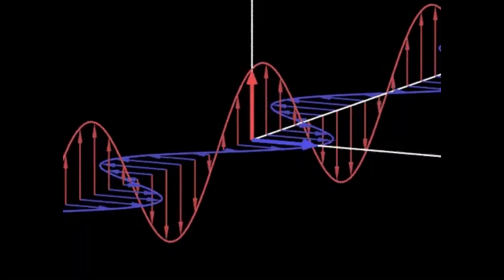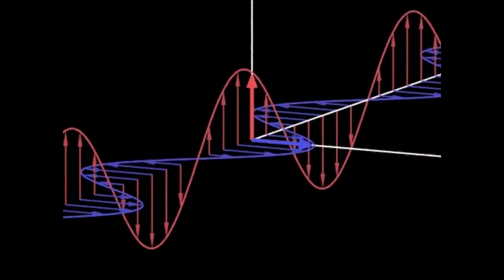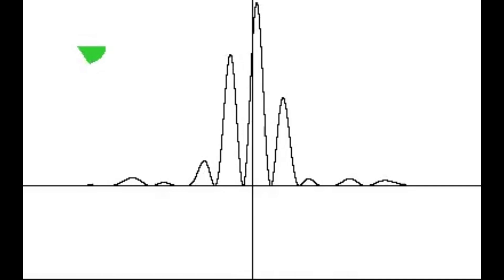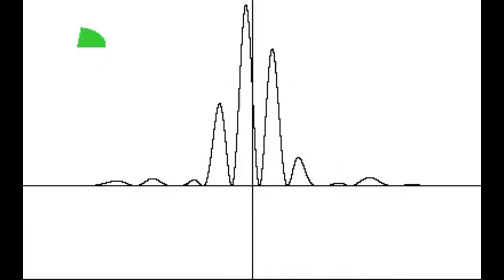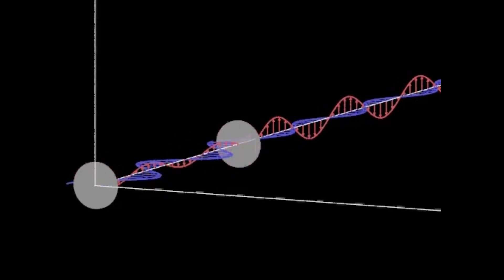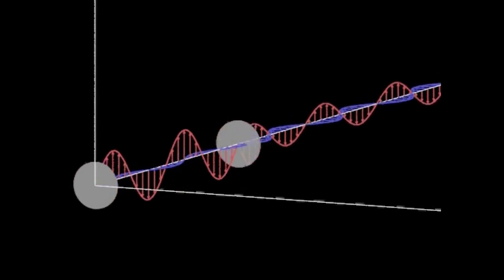The field exists independently of the source. You can remove the charge, but the field effect can still remain, especially if they're traveling as waves. In classical physics, these fields can carry energy across space, like light and gravity.